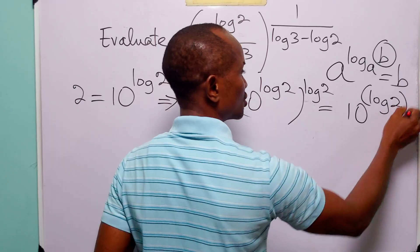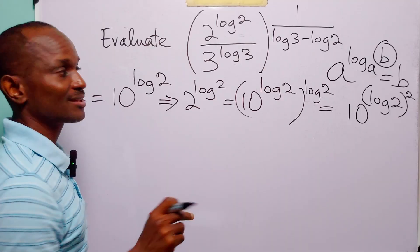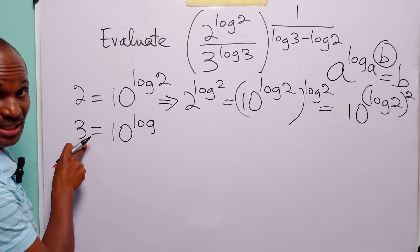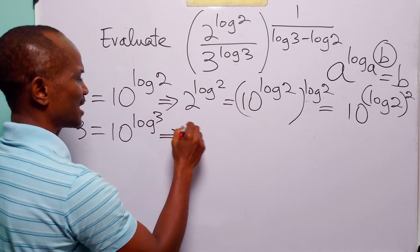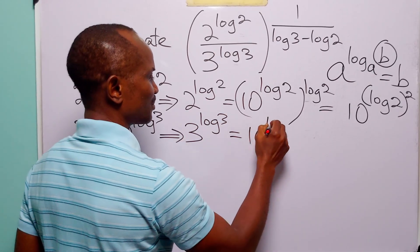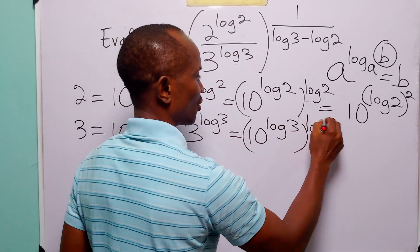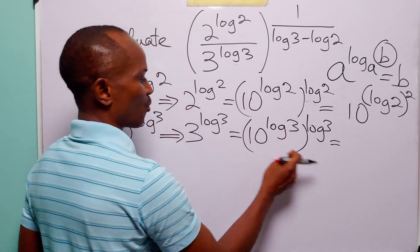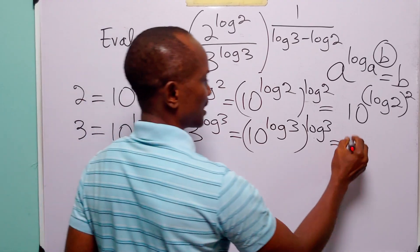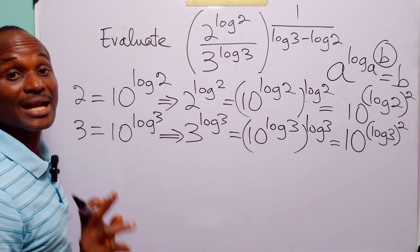We have that 2 to the power log 2 is exactly the same thing as 10 to the power log²2. Now we do exactly the same thing for the numerator. Let us write 3 as 10 to the power log 3. From here, 3 to the power log 3 equals 10 to the power log 3, to the power log 3, and removing the bracket gives 10 to the power log²3.